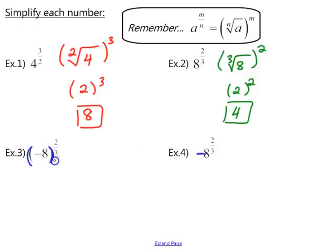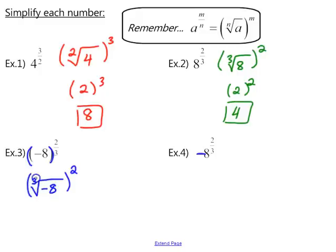In example 3, because the parentheses are around the negative 8, the negative 8 goes underneath the radical. The denominator is the index and the numerator is the power. The cube root of negative 8 — because this is an odd index, we can take odd roots of negative numbers — gives negative 2, raised to the second power. Negative 2 times negative 2 gives a positive 4.